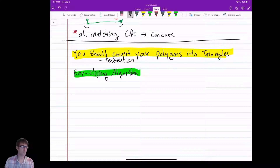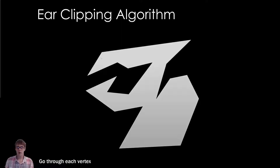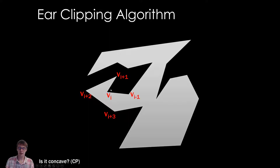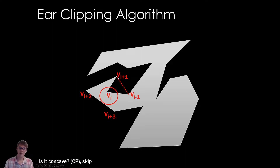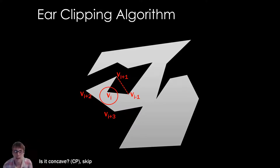I think it's better to demonstrate this with slides. Here's a polygon. The ear clipping algorithm works by going through each vertex in order. We find a vertex — let's say we're at Vi — and then we check: are we at a concave point? To figure that out, I look at my neighbors, and using cross products, I can find out whether I am at a concave point or not.